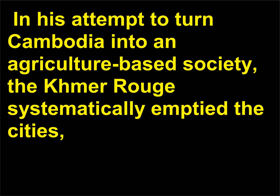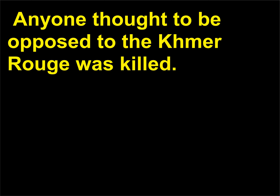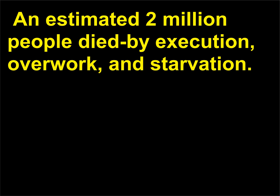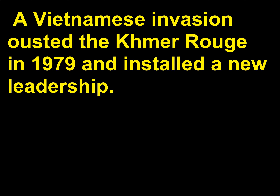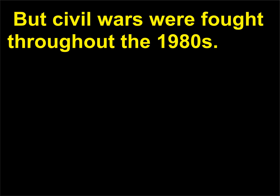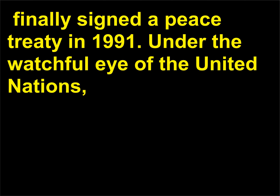In his attempt to turn Cambodia into an agriculture-based society, the Khmer Rouge systematically emptied the cities, forcibly moving the people onto collective farms where they performed hard labor. Anyone thought to be opposed to the Khmer Rouge was killed. An estimated two million people died by execution, overwork, and starvation. Pol Pot's experiment had failed, and his efforts to revolutionize Cambodia amounted to nothing short of genocide. A Vietnamese invasion ousted the Khmer Rouge in 1979 and installed a new leadership, but civil wars were fought throughout the 1980s. The warring factions finally signed a peace treaty in 1991 under the watchful eye of the United Nations.